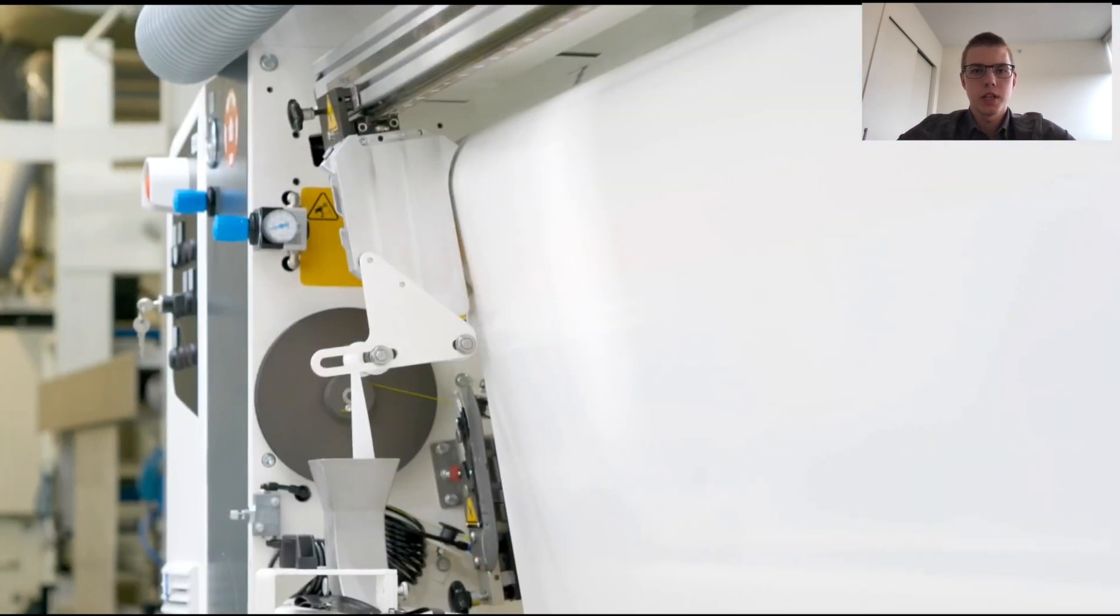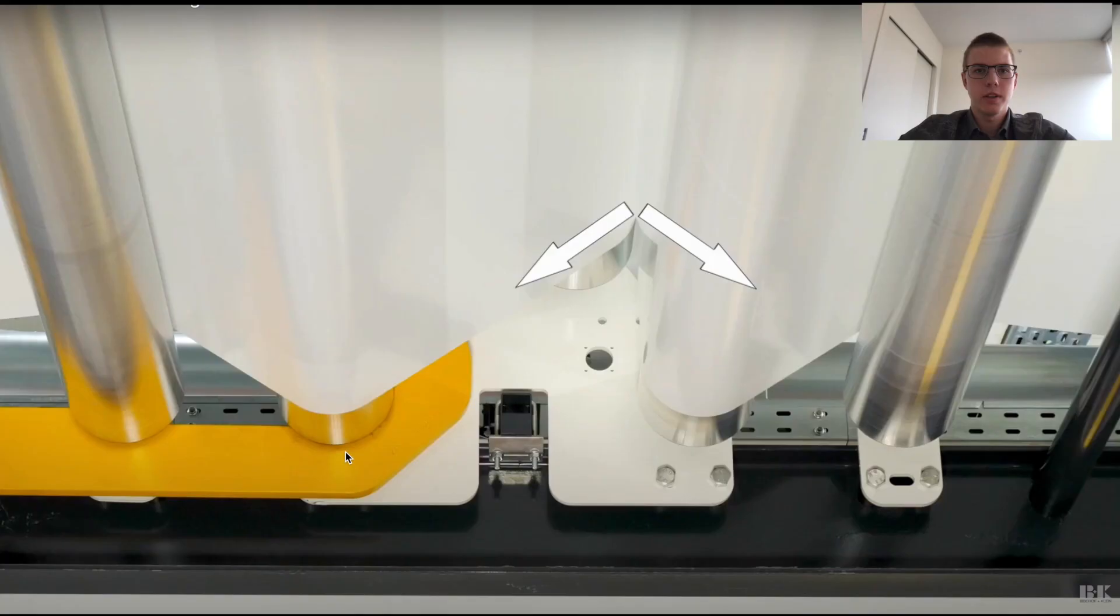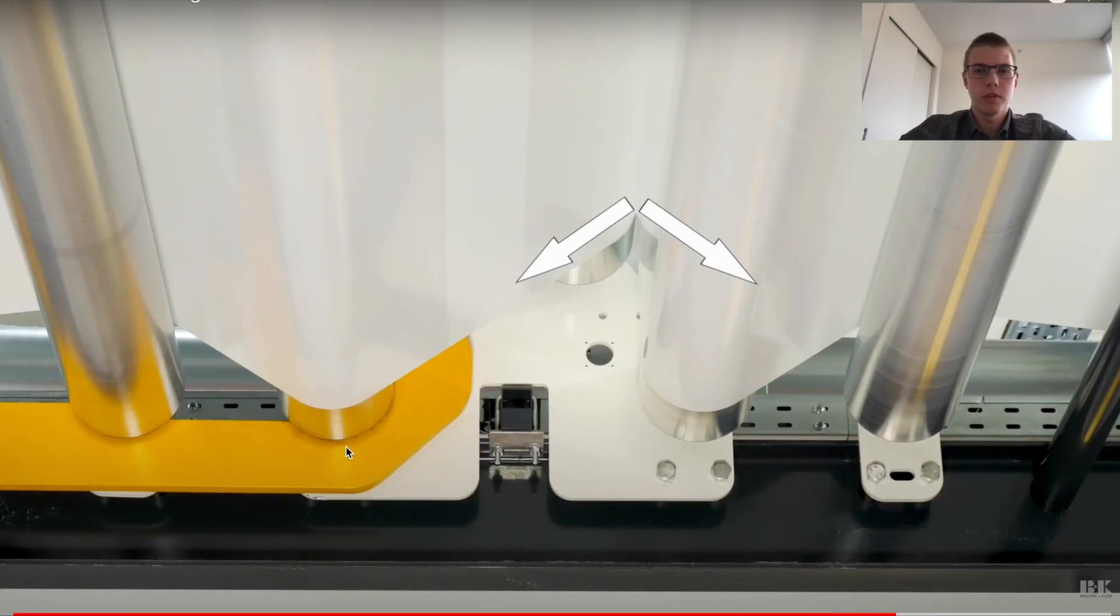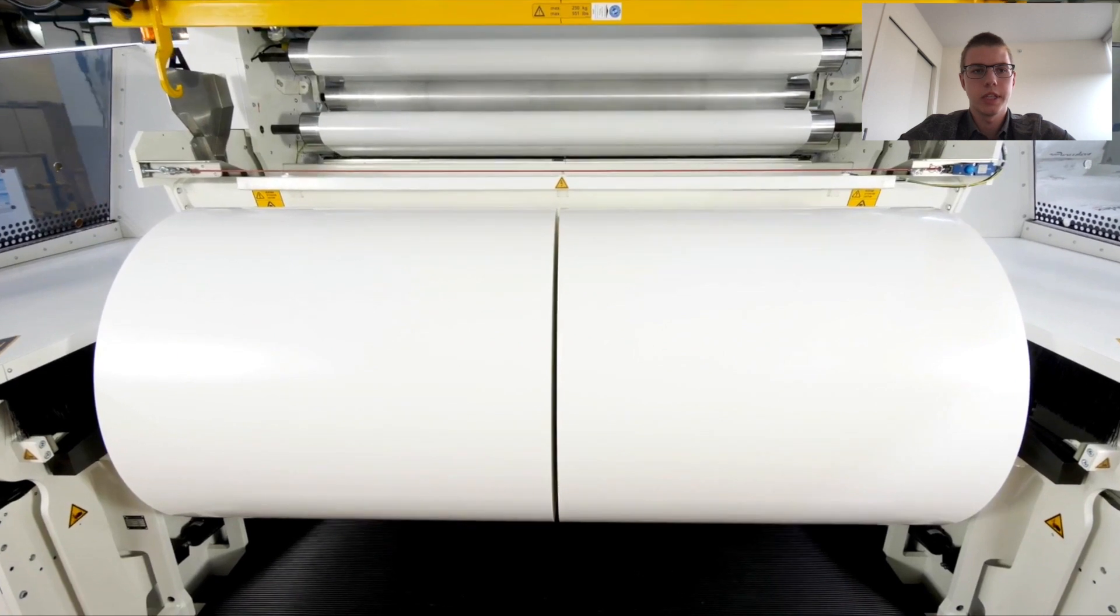Between the nip rollers and the wind-up rollers the film may pass through a treatment center where the film may be split to form two separate films or the film can be surface treated if needed.